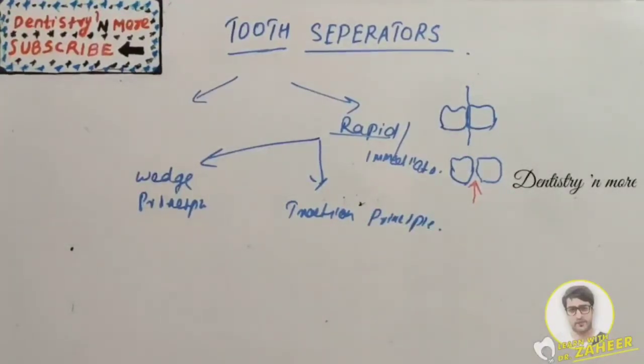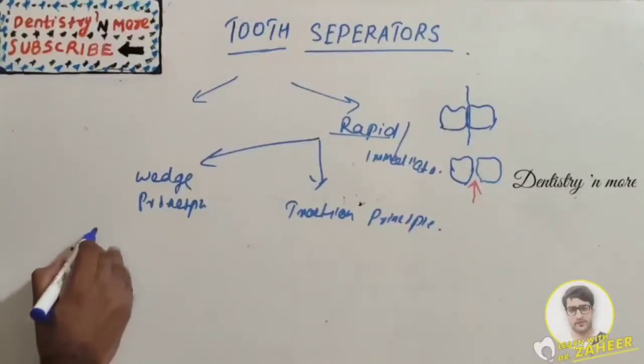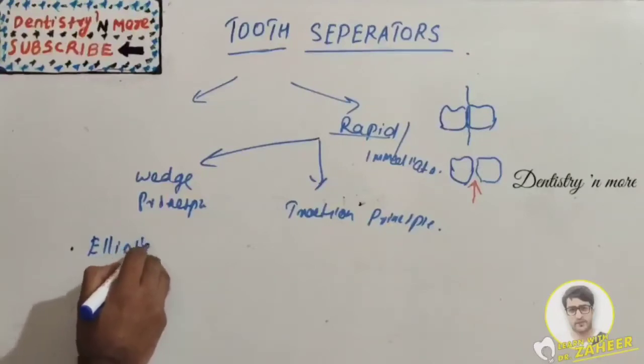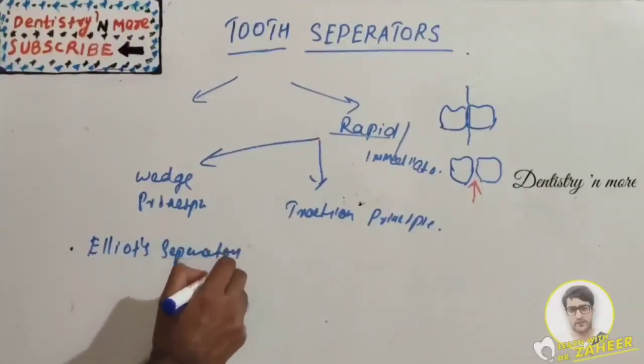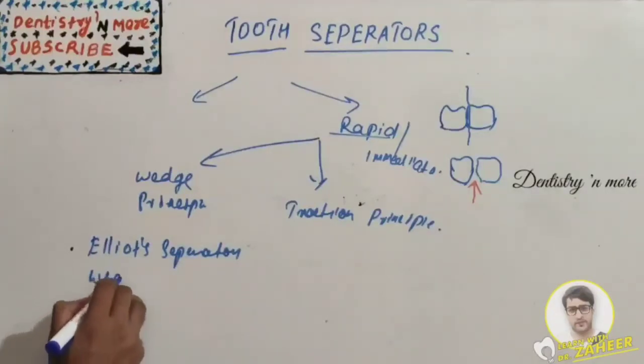In the wedge principle, a pointed wedge-shaped device is inserted between teeth to produce a desired amount of separation. The most common one is Elliott separators and wedges.